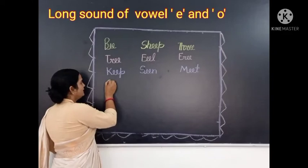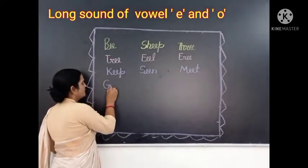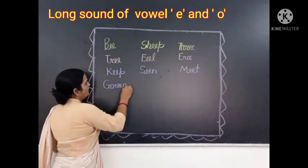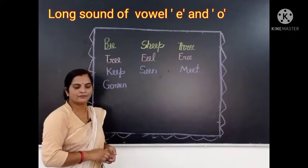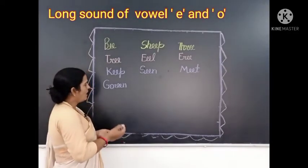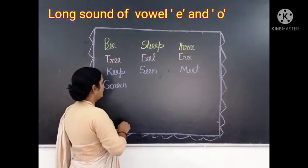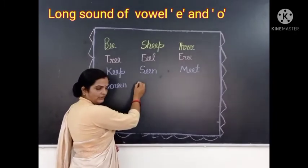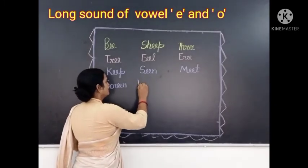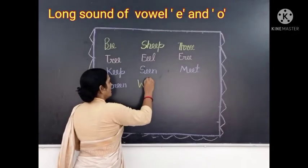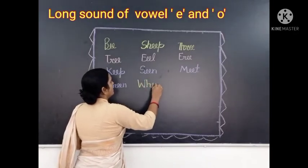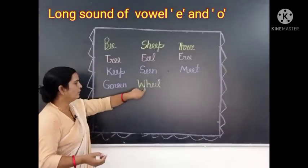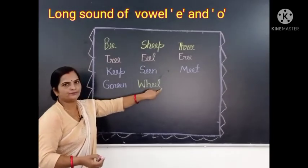Green. G-R-double E-N. Green. Okay? And now we will write the next word: Wheel. W-double E-L. Wheel. Okay?